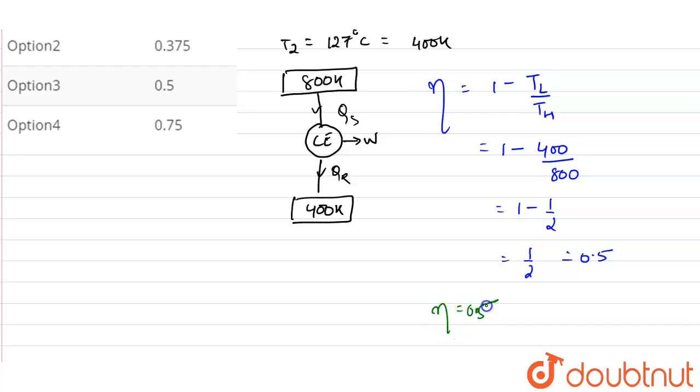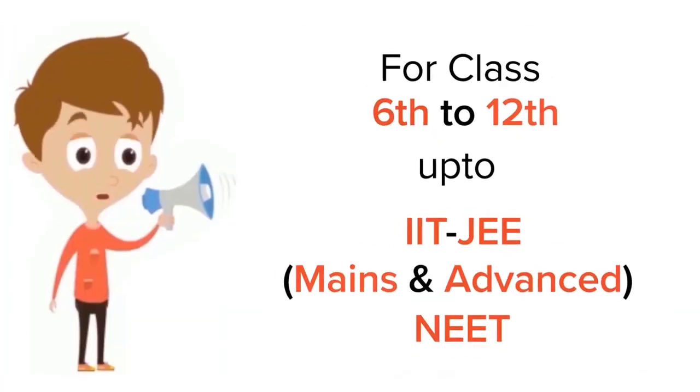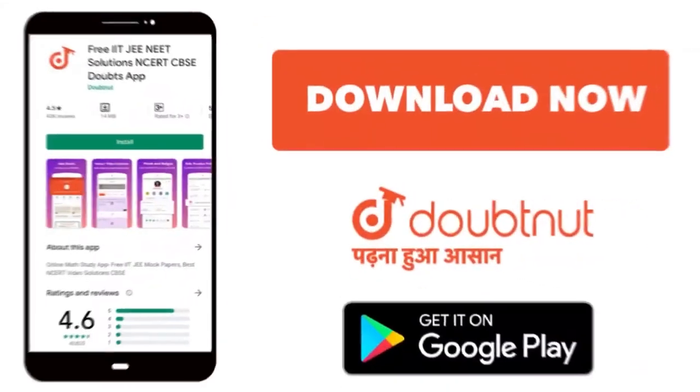So choosing out from the options, we see our option 3 is correct. For class 6 to 12, IIT-JEE and NEET level, trusted by more than 5 crore students, download Doubtnet app today.